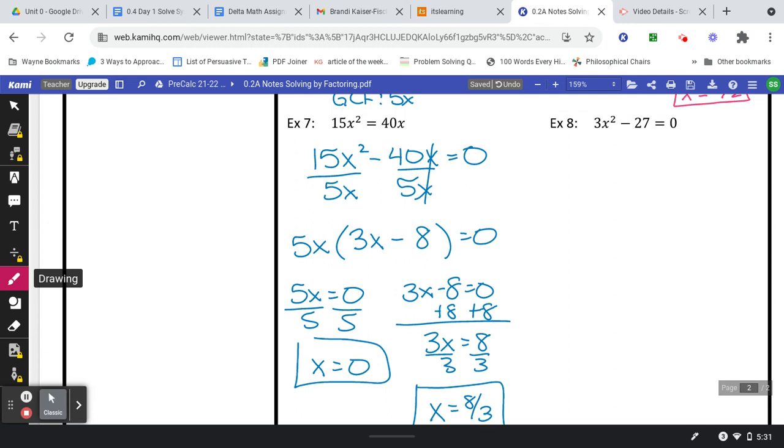All right, last one. Example number eight. My greatest common factor here is going to be 3, but it's not going to have an X because the 27 does not have an X. Therefore they don't have an X in common. So I'm gonna divide both of those by 3, putting the 3 on the outside and see what's left. X squared, bring down the minus sign, 27 divided by 3 is 9. Set each of them equal to zero.